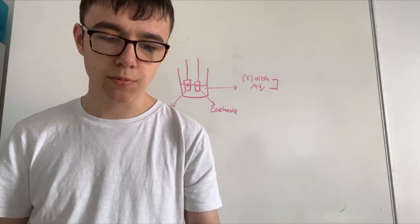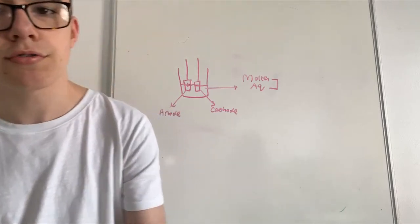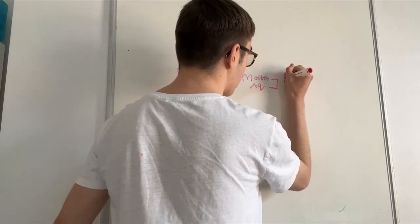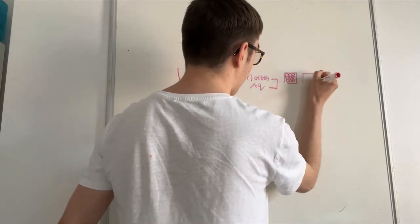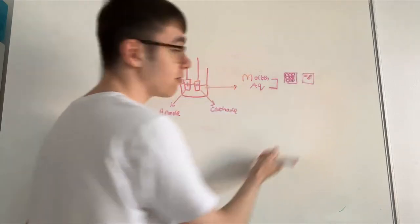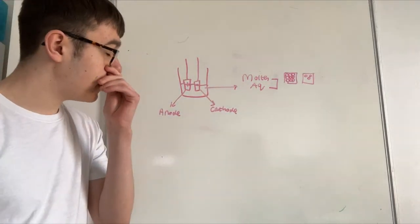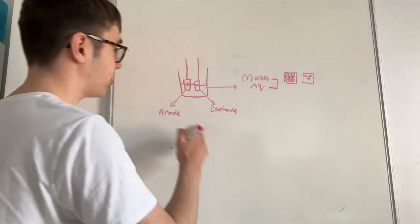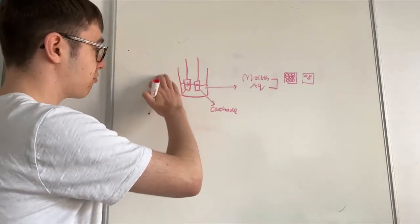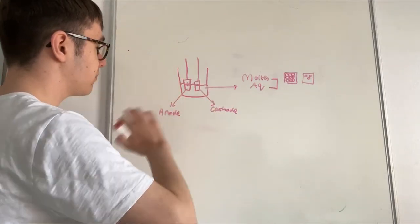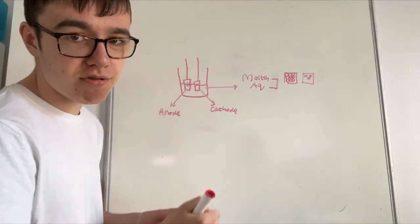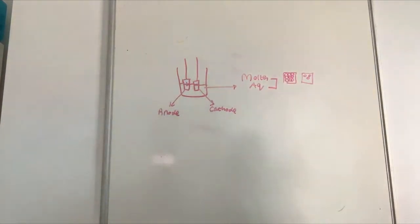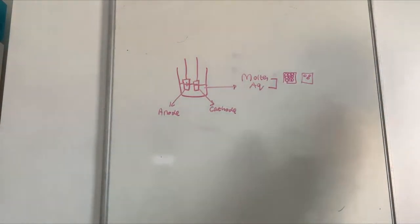Putting it in solution allows the ions to move toward the correct electrode. Particles can only move when in molten or dissolved form — in a solid structure the particles cannot move, but when in liquid form they are able to. What electrolysis does is break down the ionic lattice, which allows the different elements to go to the different electrodes.